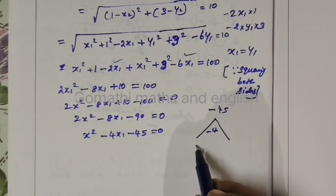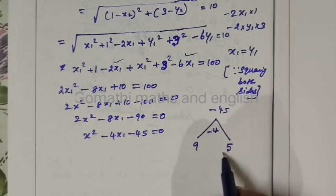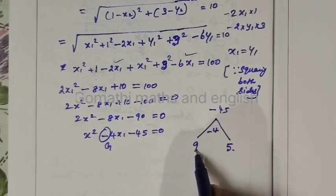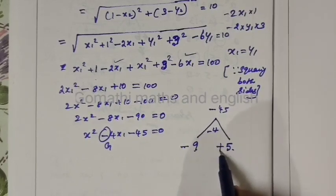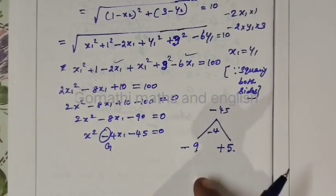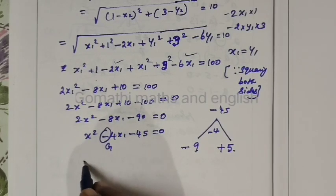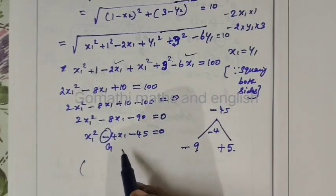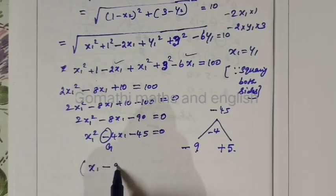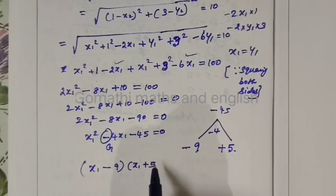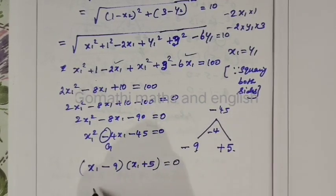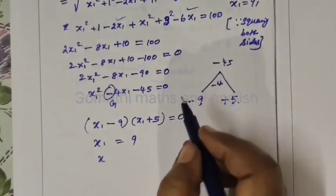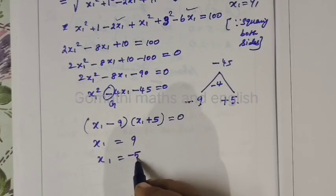So 9, 5. Here we have to use this sign. How do we use this sign? This is the greater number. Minus into minus plus. So minus 9 plus 5 minus 4. Multiply this. So x1 minus 9, x1 plus 5 equal to 0. Therefore x1 equal to 9. That means x1 equal to plus 5 or minus 5.